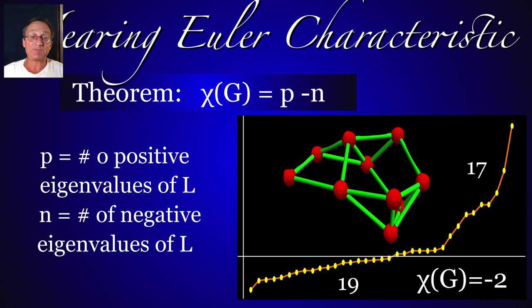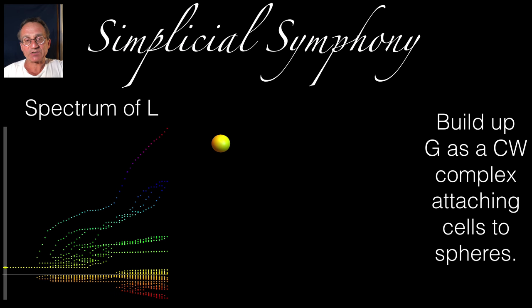For the matrix L, the number of positive eigenvalues minus the number of negative eigenvalues is the Euler characteristic. So you can hear the Euler characteristic.